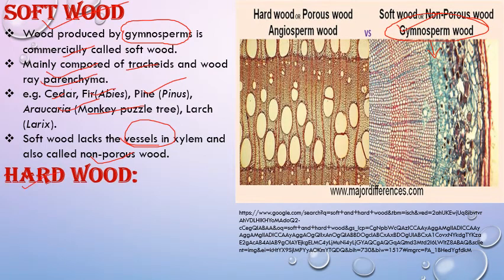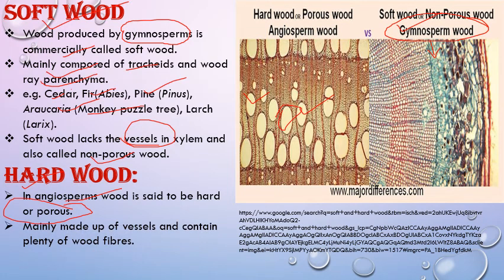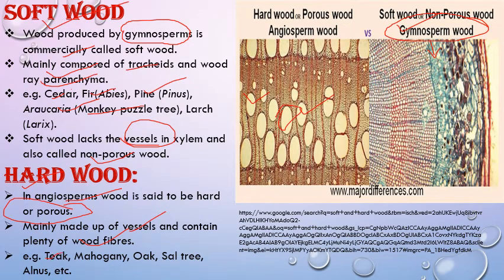Hardwood is angiospermic wood, also known as porous wood because it bears numerous vessels — these porous structures give it the name. Hardwood is not easy to work with, hence the name hardwood. It is mainly composed of vessels and plenty of wood fibers. Examples of best angiospermic wood include teak, mahogany, oak, sal tree, and Alnus.